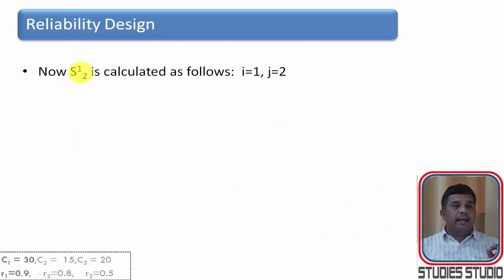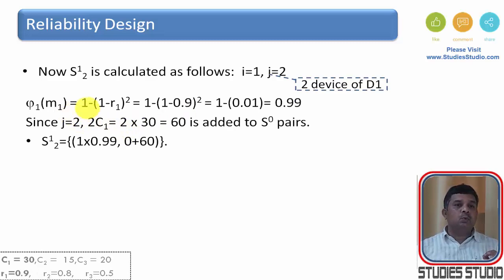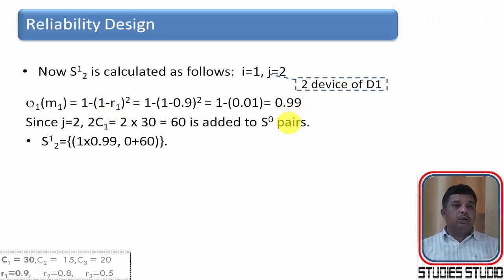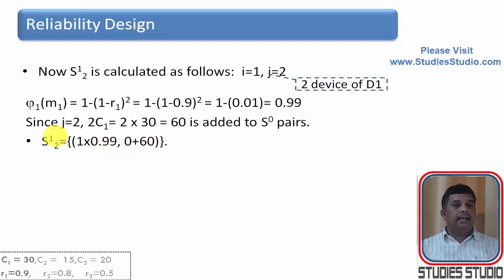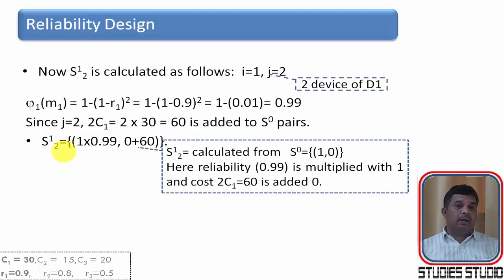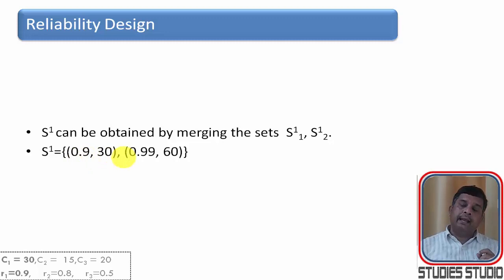S_{1,2} means two devices of D1 in parallel. The reliability is 1 − (1 − 0.9)^2 = 0.99 and the cost is 30 × 2 = 60. Combining with S_0: reliability = 1 × 0.99 = 0.99, cost = 0 + 60 = 60. So S_{1,2} = (0.99, 60). We did not compute S_{1,3} since the upper bound for D1 was 2. Taking the union of S_{1,1} and S_{1,2}, S_1 = {(0.9, 30), (0.99, 60)}.